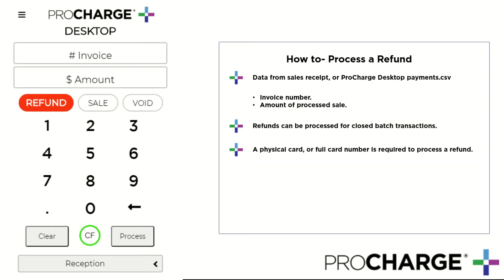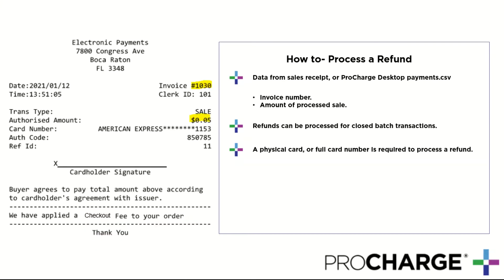In order to process a refund, you will need two pieces of information: an invoice number and a dollar amount for the transaction being refunded. This information can be found within the ProCharge Desktop Payments CSV stored within the workstation's Documents folder, or, as seen on screen, you can easily obtain this information from the receipt copy for the transaction in question.